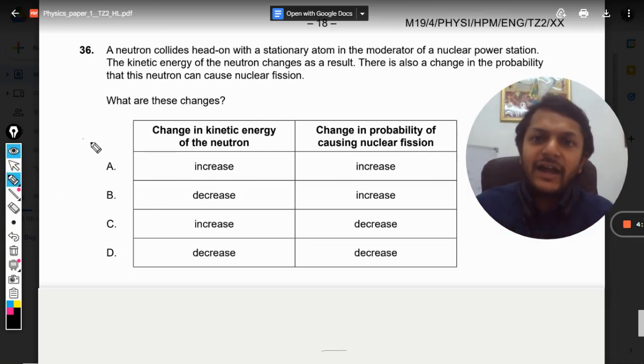A neutron collides head on with a stationary atom in the moderator of a nuclear power station. The kinetic energy of the neutron changes as a result because of the collision. There is also a change in probability that this neutron can cause a nuclear fission.